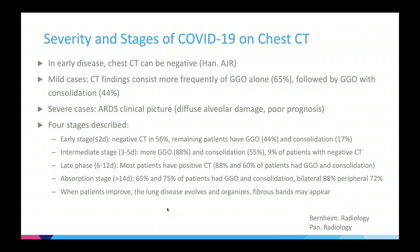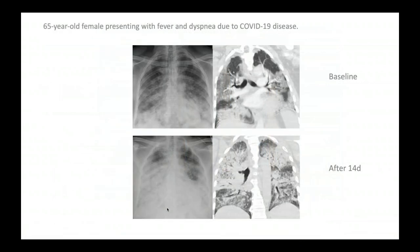Here is an example of a 65-year-old female who presented with respiratory symptoms. At initial presentation, you can see some patchy bilateral areas of opacity on the chest x-ray, with corresponding ground glass opacity and consolidation on the chest CT. After two weeks, the patient's condition worsened, and this is almost like an ARDS-type picture where patients generally require mechanical ventilation.